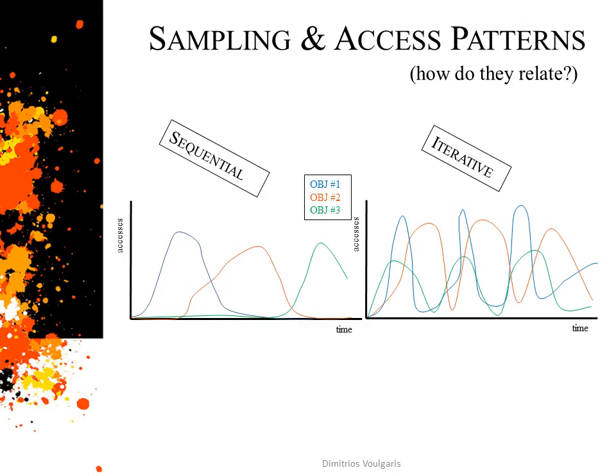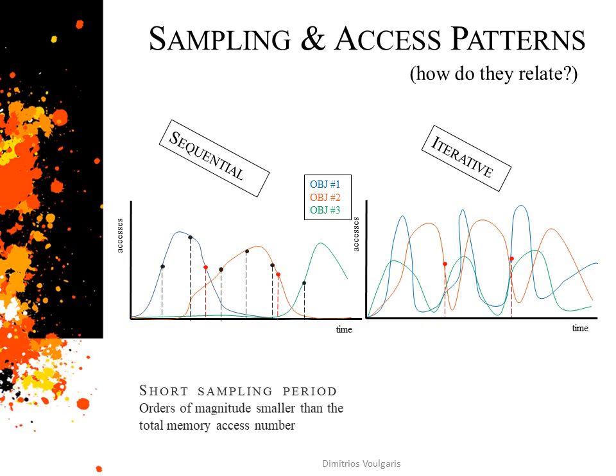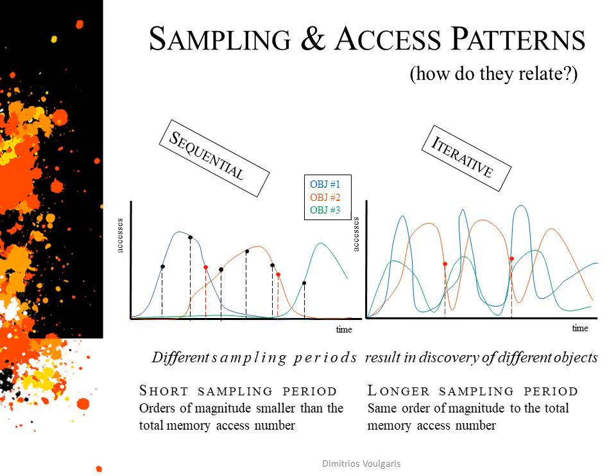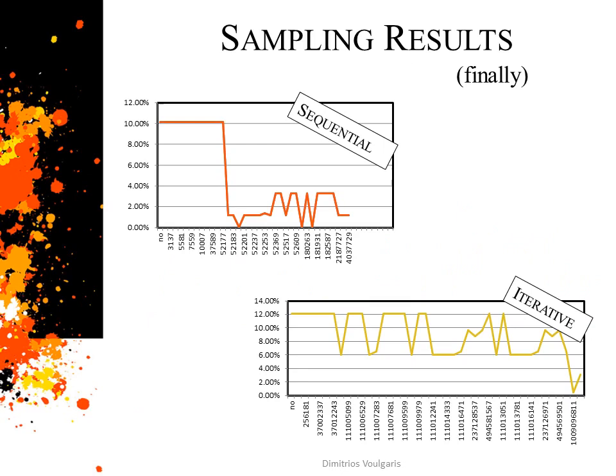In the first case, if we sample too sparsely as the red line indicates, we'll miss many objects — shorter periods such as the black dotted lines are required. In the second case, however, sparse sampling is enough to account for most objects as they keep being referenced while the application executes. The experimental procedure verifies this: in the first case, only a relatively short sampling period results in important speedup, while in the second case we can experiment with significantly higher sampling periods and still get efficient results. When our workflow is completed, an overall 10% and 12% speedup respectively is achieved.